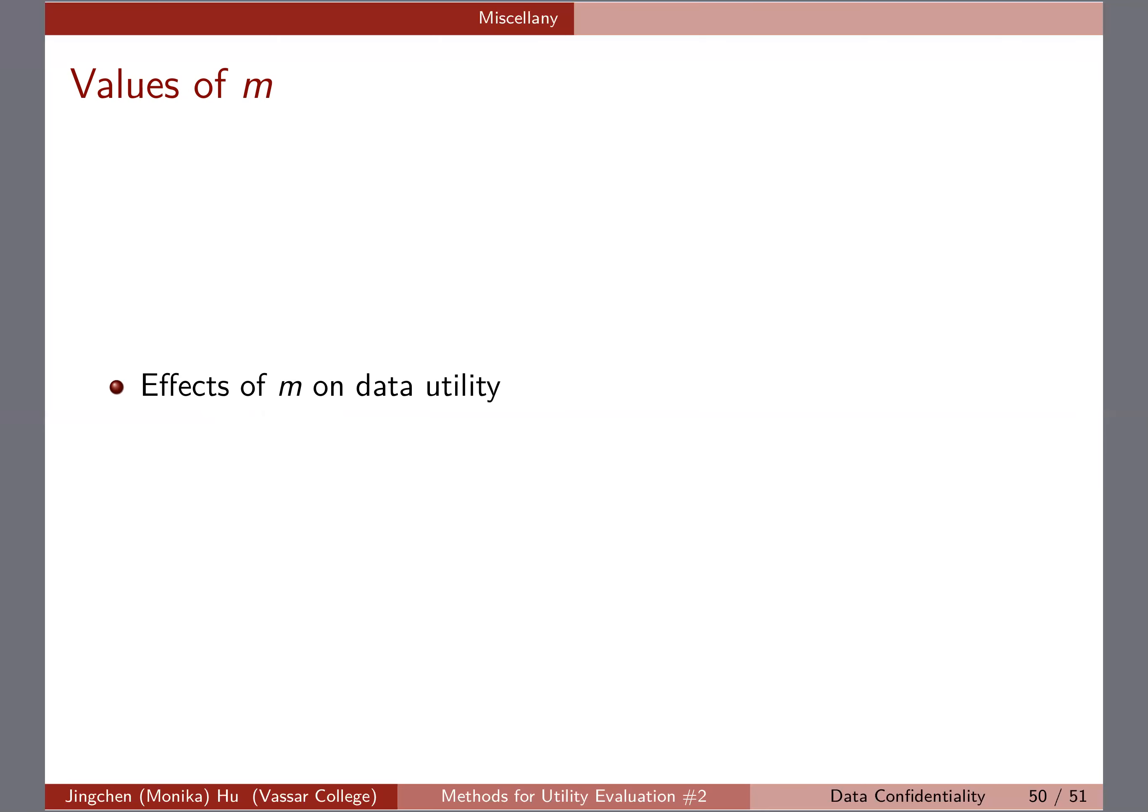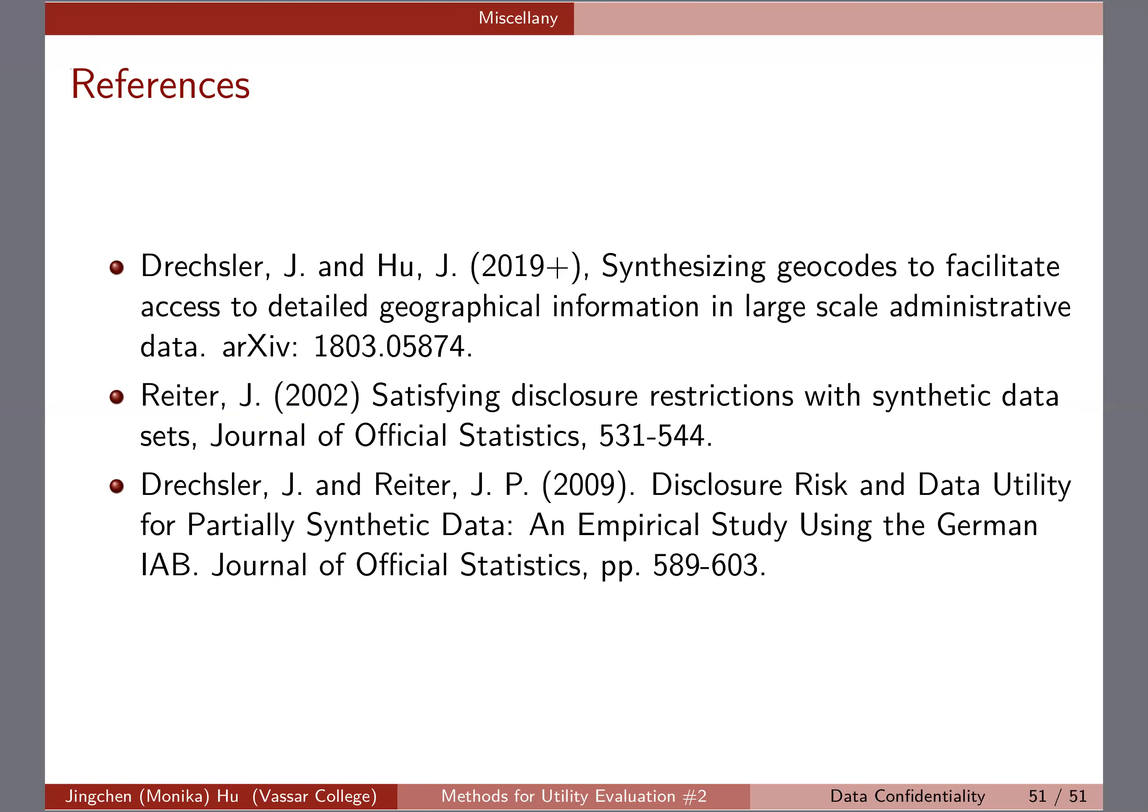But we also know that because you're generating or simulating, you're releasing more copies of that synthetic data, which might unexpectedly—or intentionally, I should say—increase the disclosure risk. So we're going to now talk about how to evaluate the identification disclosure risk for categorical data.